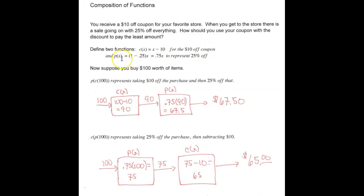And then we'll define p of x, which is your 25% off piece. We would represent that as 1 minus 0.25 times the amount you spend. And that's going to simplify to 0.75x. So you're going to be paying 75% of the amount, which is the same as 25% off.